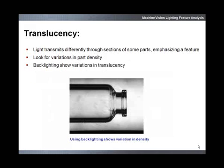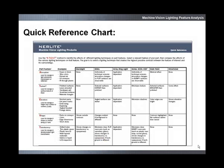The translucency of an object can be analyzed by using a backlight. Different densities in a part will yield different reflections back to the camera, as seen in this example. Other applications using translucency might include detecting air bubbles in glass or the inspection of screen printing on a clear surface. Seeing through materials is one way of inspecting inside a package or inside a bottle. Often, infrared light is used for inspecting through a part. This quick reference chart is available at microscan.com under the lighting section.